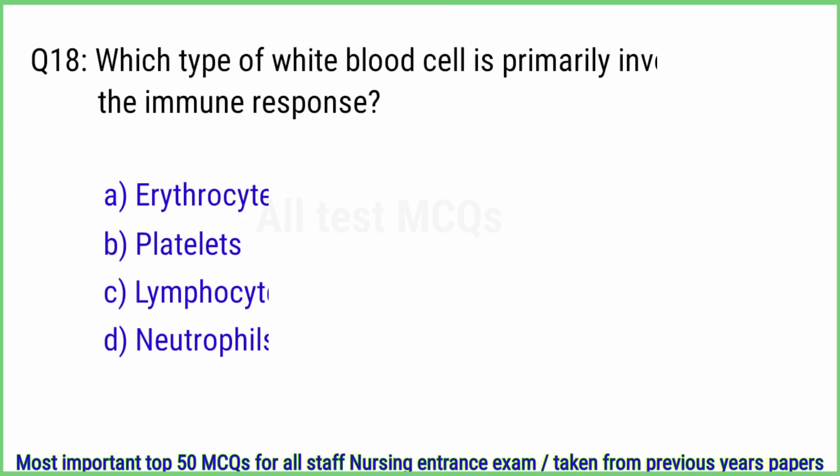Q18. Which type of white blood cell is primarily involved in the immune response? The right answer is option C, lymphocytes.